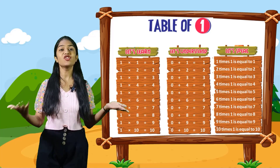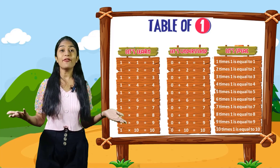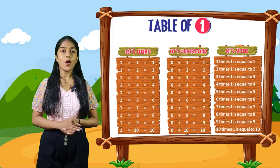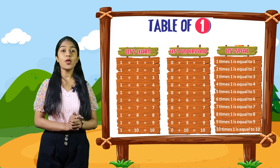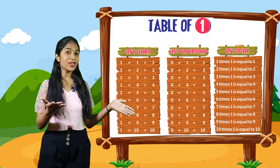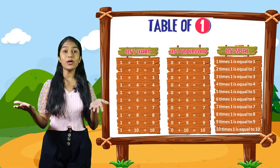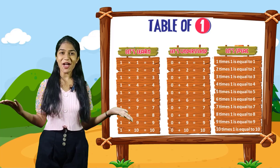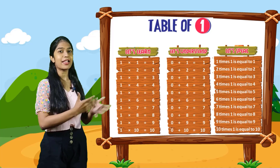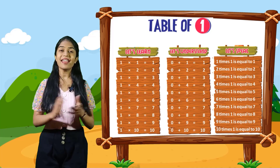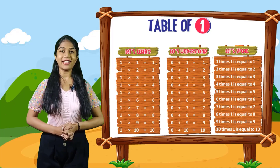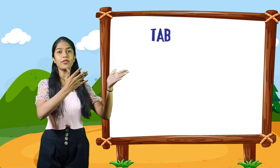So kids, here is a hand with her chick. You have to match the correct hand with the correct chick. For example, 1 into 6 is equal to 6, so you have to match the hand with the chick who is having 6 numbers. Rest you have to do yourself.